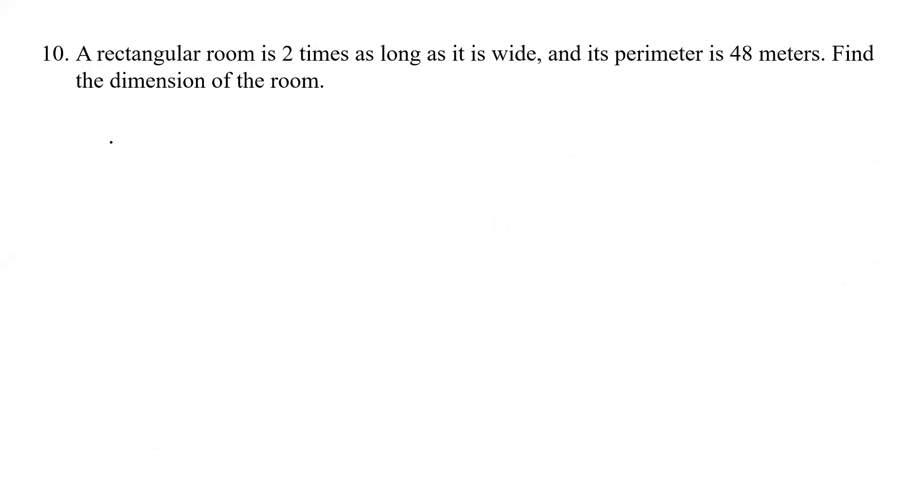Alright. So we're doing a rectangular room. So let's draw a rectangle first before we do anything. So it says a rectangular room is two times as long as it is wide. The perimeter is 48 meters. Find the dimension of the room.